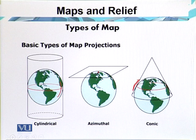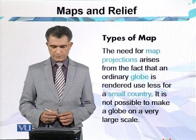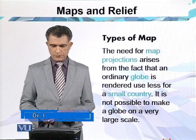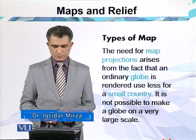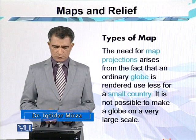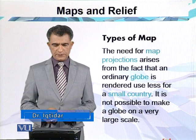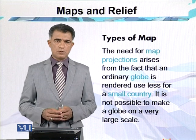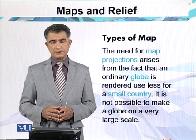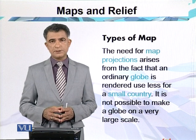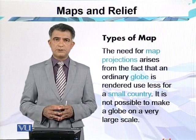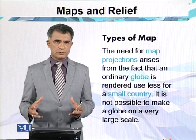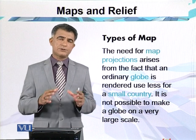The need for map projections arises from the fact that an ordinary globe becomes less useful for representing a small country, and it is not possible to make a globe on a very large scale. The globe represents the true picture of the earth, but a map is the transfer of actual positions located on the earth's surface onto a sheet of paper.